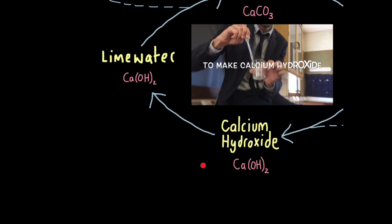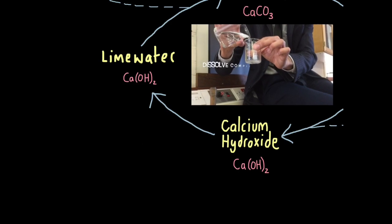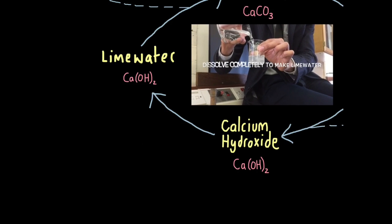Now we have slaked lime. And if we keep pouring water into it, we make limewater, which is also calcium hydroxide solution. It's chemically the same, we've just dissolved it completely. I'm just adding more water and it's going to dissolve completely.